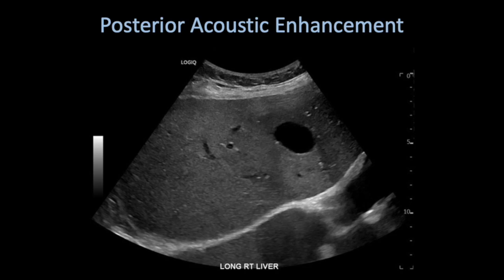Let's look at this example of posterior acoustic enhancement. In this ultrasound image you can see a cyst within the liver. Posterior to the cyst, you can see that the liver parenchyma appears brighter than the background liver parenchyma — so-called posterior acoustic enhancement.